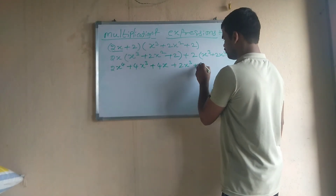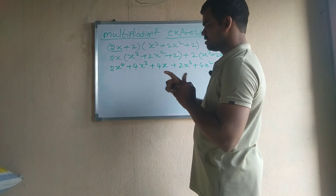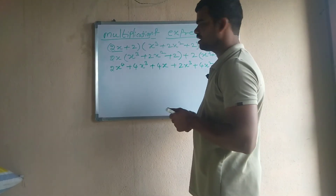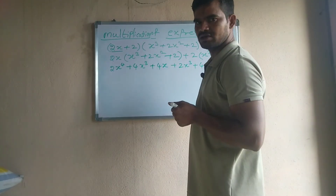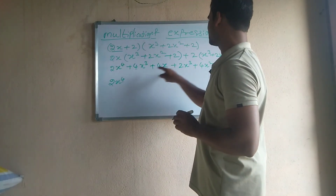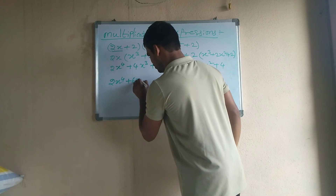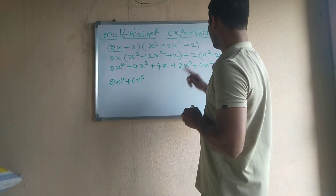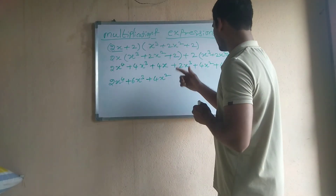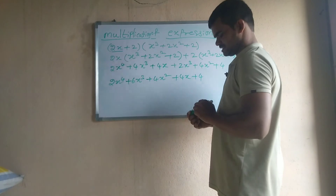Plus 2 times 2 gives 4x squared, and 2 times 4 gives 4x. Now just add or subtract the like terms. The x to the power 4 term has only one term, so I am writing 2x to the power 4. Next, 4x cubed plus 2x cubed is 6x cubed. Next we have 4x squared only, so just writing 4x squared. And finally we have 4x plus 4. This is the final result.